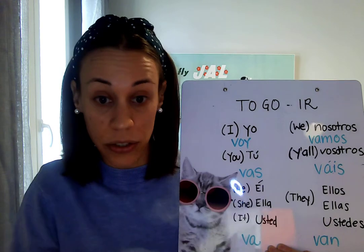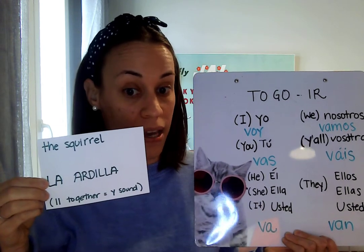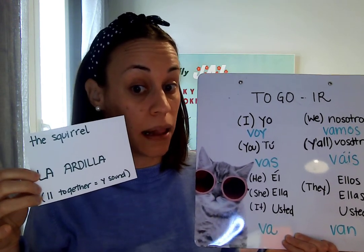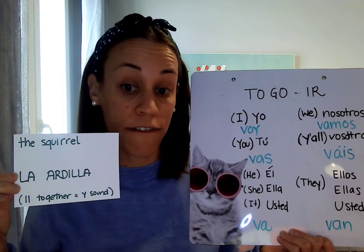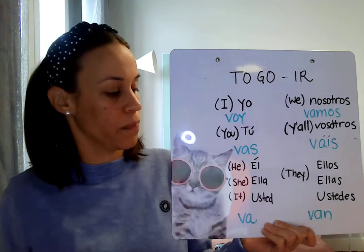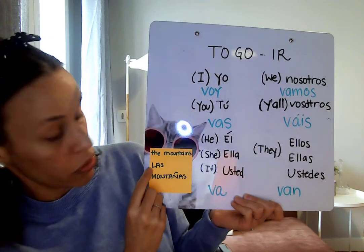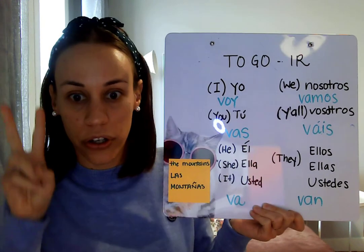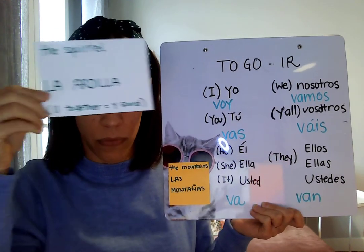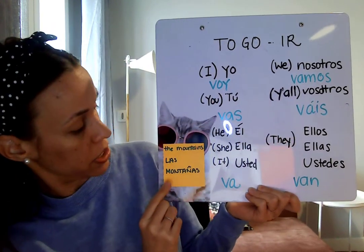Let's put together some sentences using some animal friends. This squirrel is called la ardilla — you notice that the double L makes the Y sound. La ardilla is a feminine word. Where will la ardilla go? I think that la ardilla will go to the mountains, las montañas. Now you've learned two vocabulary words: la ardilla, the squirrel, and las montañas, the mountains.